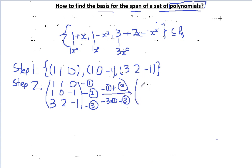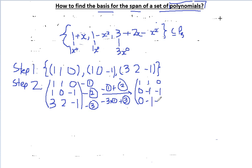So the first row will not be affected. For the second row: minus 1 plus 1 equals 0, minus 1 plus 0 equals minus 1. For the third row: minus 3 times 1 plus 3 equals 0, minus 3 times 1 plus 2 equals minus 1. So we get a new row 1, new row 2, and new row 3.